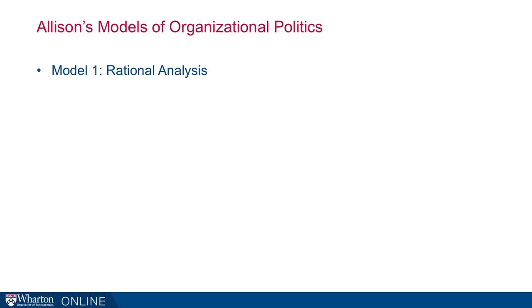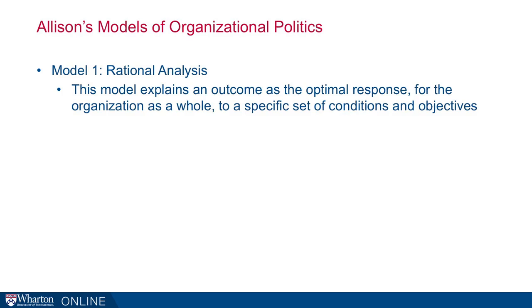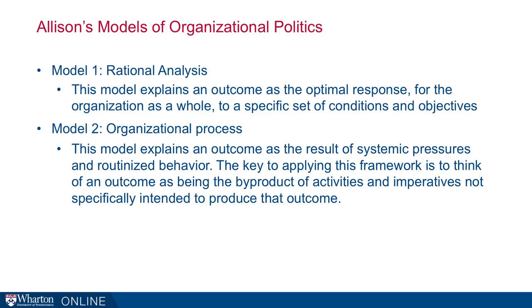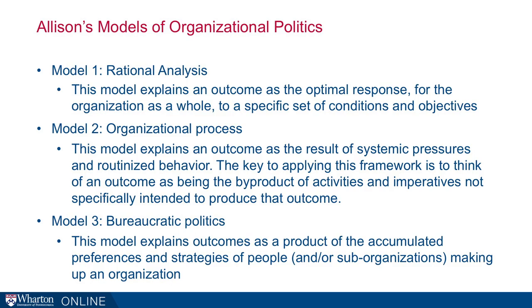To recap Allison's models of organizational politics — discussed here in governmental situations but relevant to non-governmental ones as well. Model 1, rational analysis: explains an outcome as the optimal response for the organization as a whole to a specific set of conditions and objectives — very rational, and the traditional way of thinking about organizations. Model 2, organizational process: explains an outcome as the result of systemic pressures and routinized behavior — outcomes are byproducts of activities and imperatives not specifically intended to produce that outcome. Model 3, bureaucratic politics: explains outcomes as a product of accumulated preferences and strategies of people or sub-organizations, where negotiations between parts of an organization produce the final result.